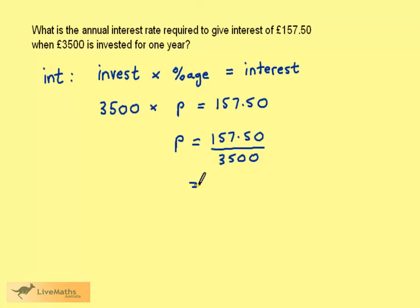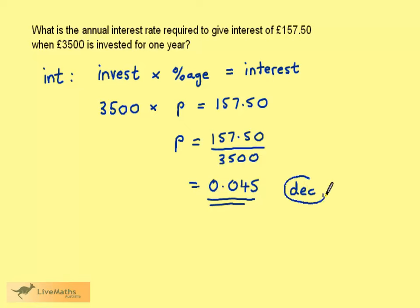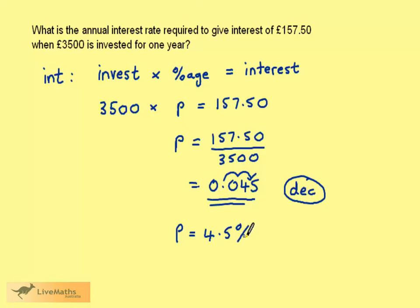Calculating this gives us 0.045. This is a decimal, and we want to give the answer as a percentage. So to convert to a percentage, we just multiply by 100, which gives us 4.5%.